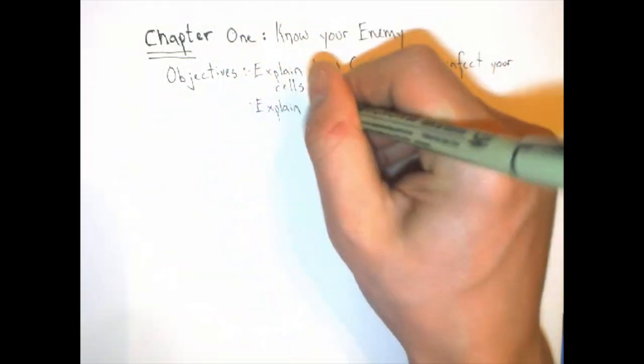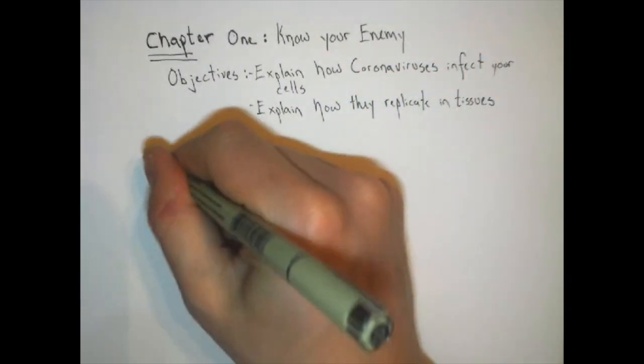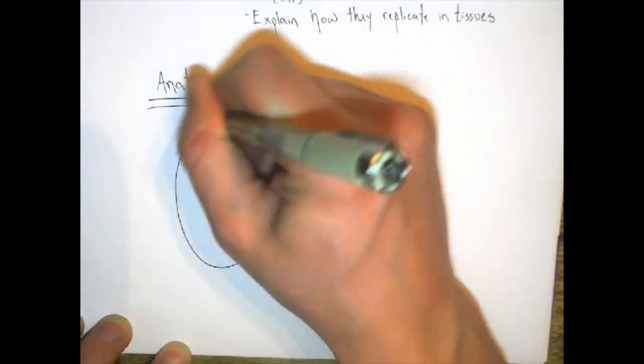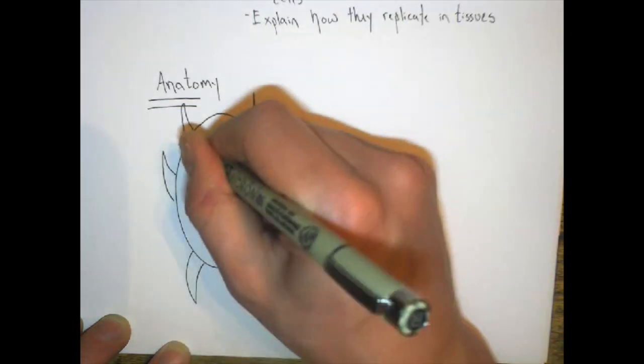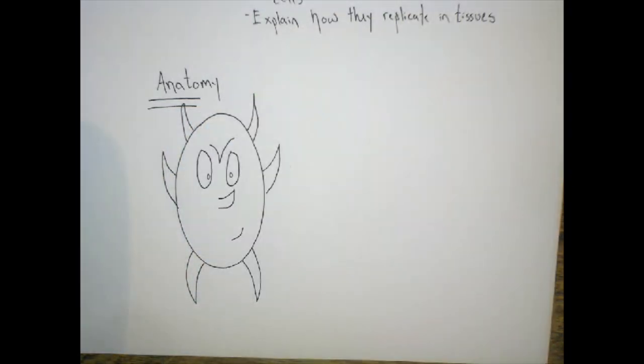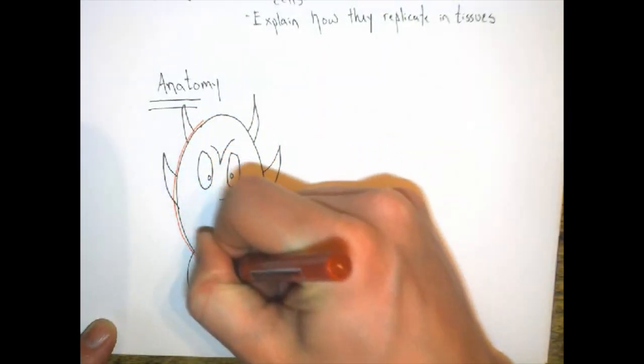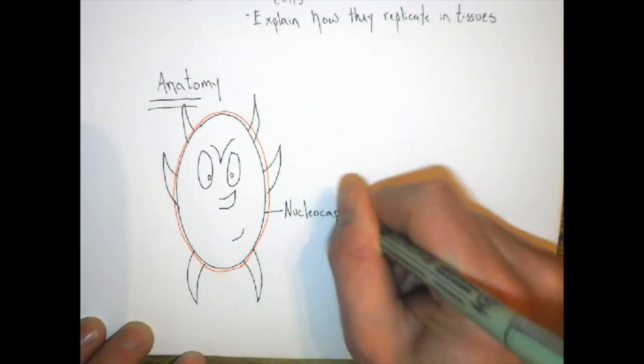Now, before we talk about how the virus enters your body, let's start with some basic anatomy. This guy is an enveloped nucleocapsid, which basically means that the virus is made up of nucleocapsid proteins arranged in a spherical shell, and then that is enveloped by a lipid membrane or lipid bilayer. It's the same lipid bilayer that surrounds your cells.